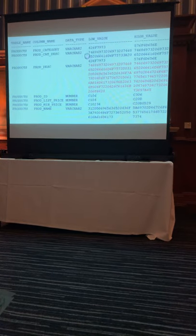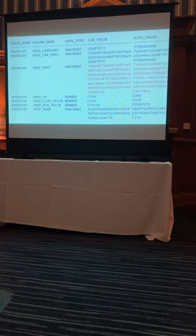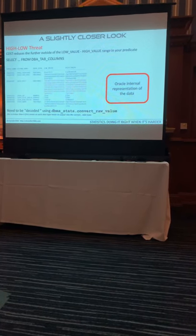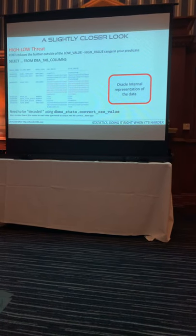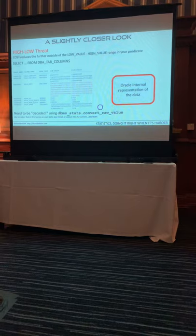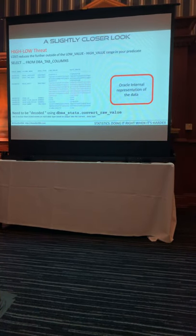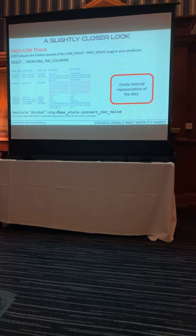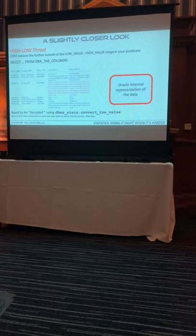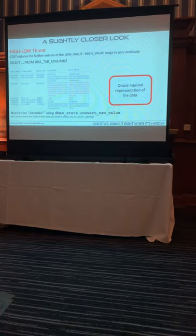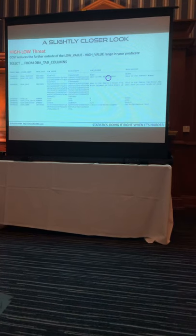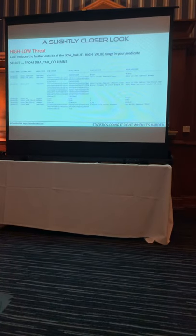When you look at the high-low values and select them from DBA_TAB_COLUMNS, you can see these values which are really difficult to understand because they are an Oracle internal representation of the data. But you can actually decode these yourself using DBMS_STATS.CONVERT_RAW_VALUE, and it will convert them. The problem is it's slightly harder than it looks because where it's VARCHAR2 it returns VARCHAR2, where it's a number it returns a number, where it's a float you get a float back - so it's slightly tricky to do this query. But if you do it, you can see the low and high value decode nicely into something human-readable.